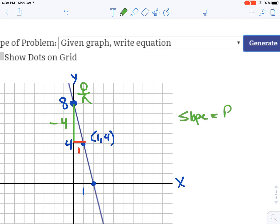Rise over run. Since it's going down, it's negative 4 over 1, which is just negative 4.